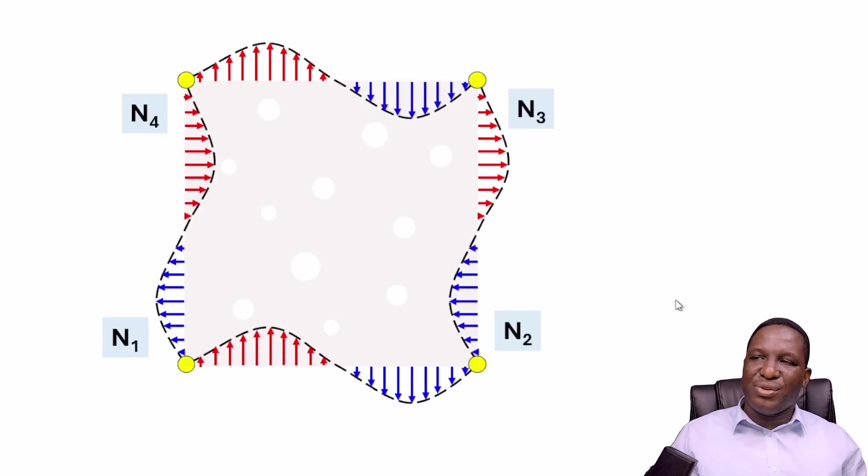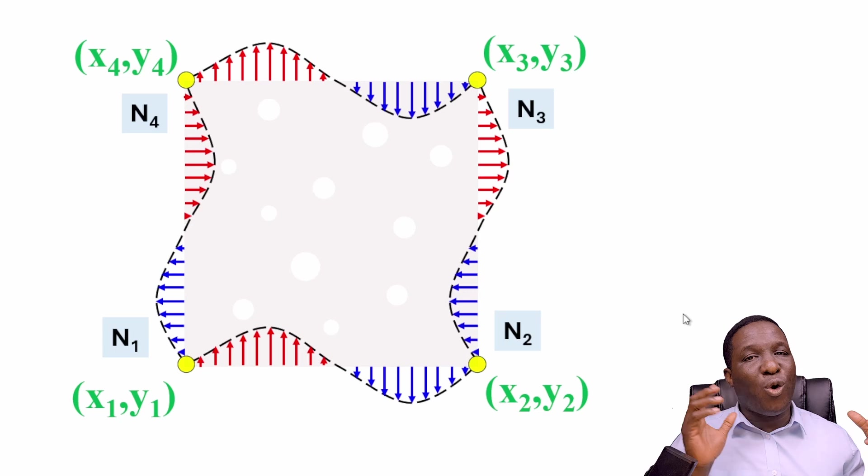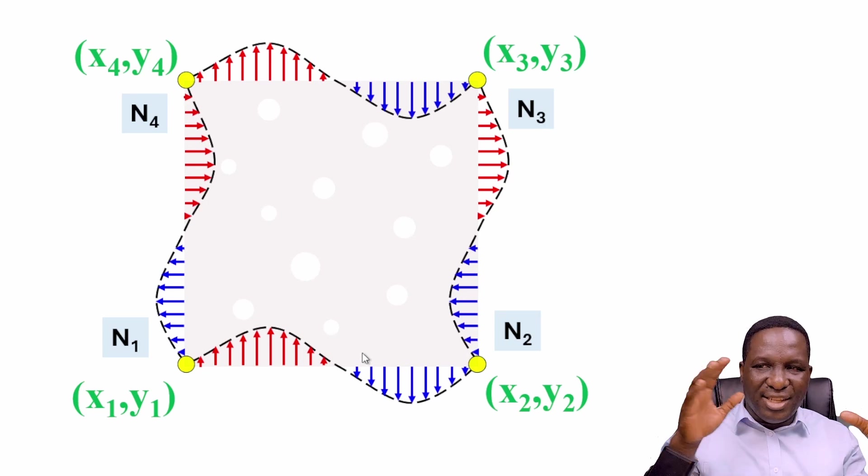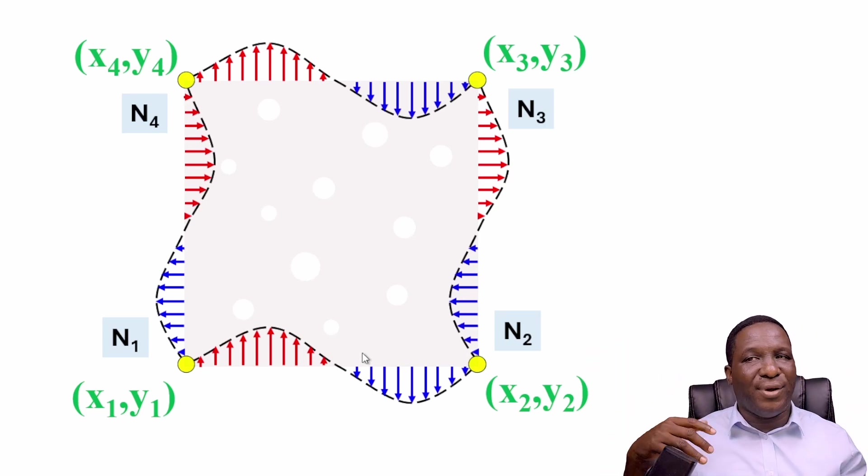To get stress-strain data, we first note these corner nodes—each has a coordinate position in space. I've got x1, y1, x2, y2 as the coordinate locations for nodes 1, 2, 3, and 4 in space.